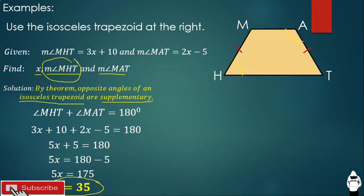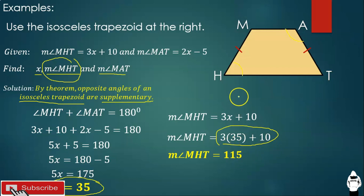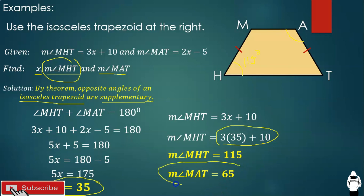Now we find the measurement of angle MHT. Since angle MHT equals 3X + 10, substituting X = 35: angle MHT = 3 times 35 plus 10 = 105 + 10 = 115 degrees. For angle MAT: since these are opposite angles and supplementary, 180 − 115 = 65 degrees. So angle MAT is 65 degrees.